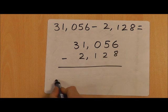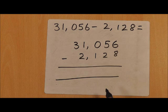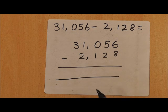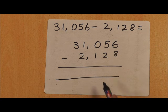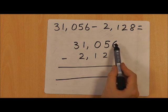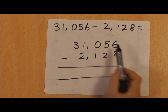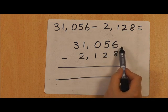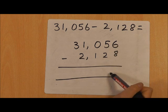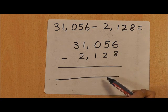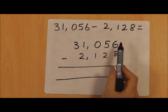I'm now going to subtract each column, and when I'm subtracting I always start with the lowest value column. To begin with, I'm going to try and do 6 minus 8. Now because this number is smaller, 6 subtract 8 would give me a minus answer, which will not work in column subtraction.